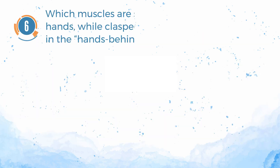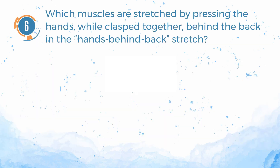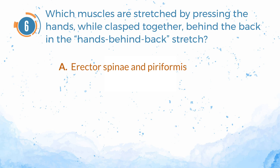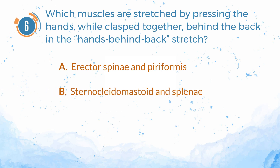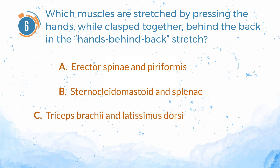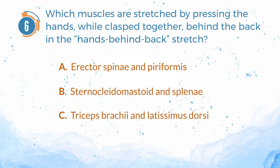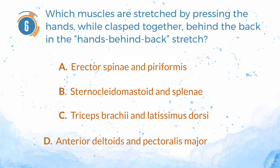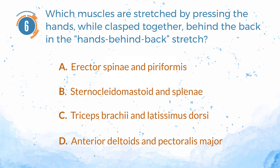Number 6. Which muscles are stretched by pressing the hands, while clasped together, behind the back in the hands-behind-back stretch? A. Erector spinae and piriformis. B. Sternocleidomastoid and splenius. C. Triceps brachii and latissimus dorsi. D. Anterior deltoids and pectoralis major.